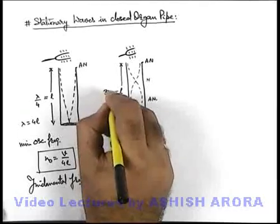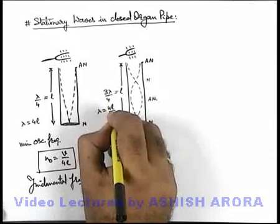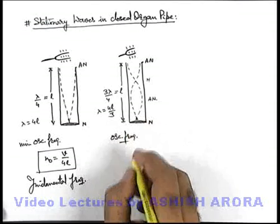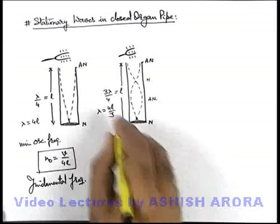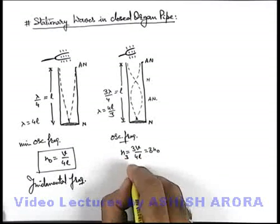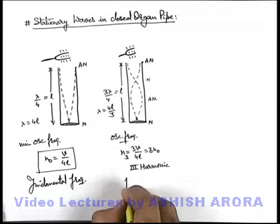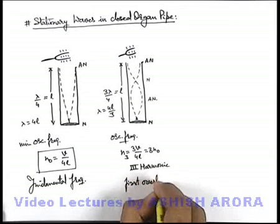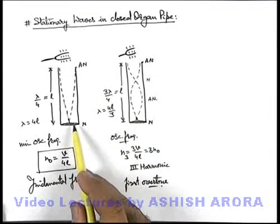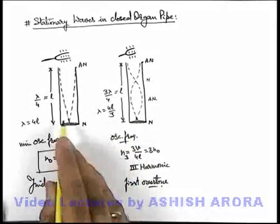So the length should be equal to 3 lambda by 4, or in this situation the wavelength of the wave will be equal to 4L by 3. So if we find the oscillation frequency at which this stationary wave can be established, it is v upon lambda which is 4L by 3. You can say it is 3 times the fundamental frequency, or it can be written as the third harmonic frequency, which is the first overtone at which again a stationary wave can be established after the minimum frequency. There exists no frequency between the first and third harmonic at which a stationary wave can be established.